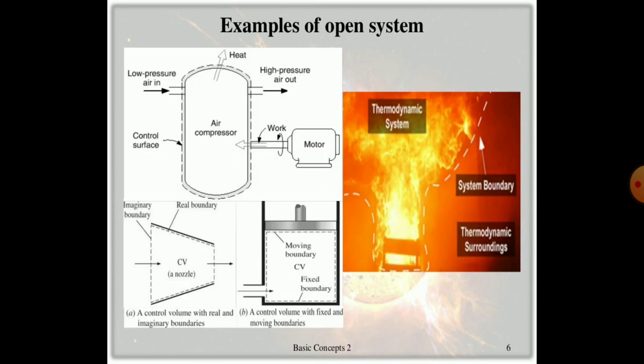On screen you can see an example of an open system: an air compressor driven by a motor. The work of the air compressor is to deliver high-pressure air to a container, and the control surface represents the walls of the compressor. We can consider the thermodynamic system as the atmosphere, with boundaries up to which heat transfer takes place, and the surrounding as the atmosphere or universe.